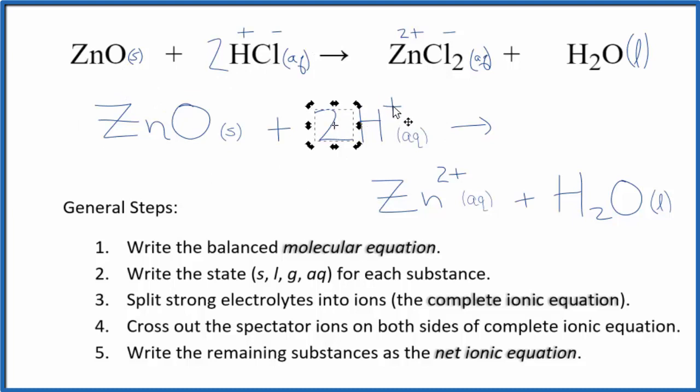In the reactants we have two times the one plus, so we have a two plus. In the products we have a two plus, so those balance out. If you count the atoms up, they're balanced as well. This is Dr. B with the balanced net ionic equation for ZnO plus HCl. Thanks for watching.